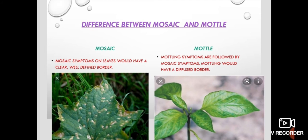Mosaic symptoms are mainly due to chlorosis — loss of chlorophyll pigment.